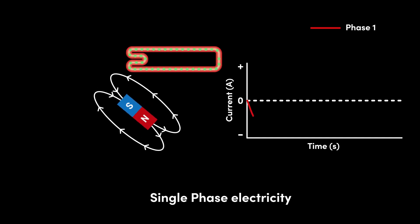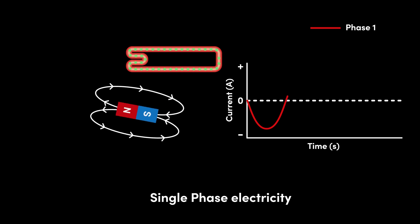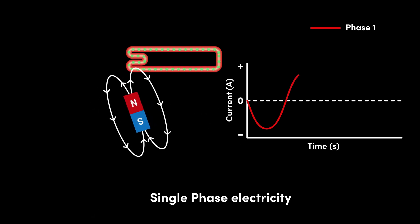Single phase electricity is generated when we have one coil next to a rotating magnet, producing one sine wave, that is one phase of alternating current.